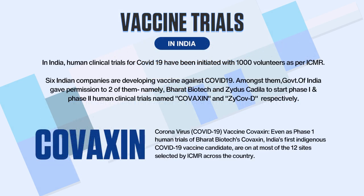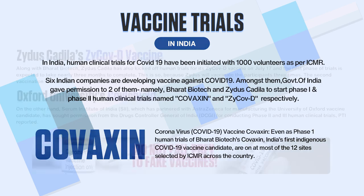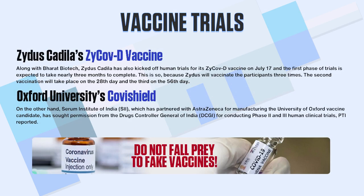In India, human clinical trials for coronavirus have been initiated with around 1,000 volunteers as per ICMR. The representative of ICMR stated that since India is one of the largest vaccine producers, it's the country's moral responsibility to fast-track the vaccine development process. India's first indigenous COVID-19 vaccine, Covaxin, is developed and manufactured in Bharat Biotech's BSL-3 high containment facility. Some other major vaccine manufacturers are Zydus Cadila's ZyCoV-D and Oxford University's Covishield.